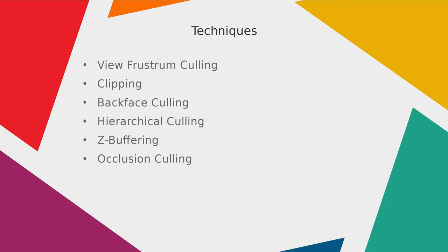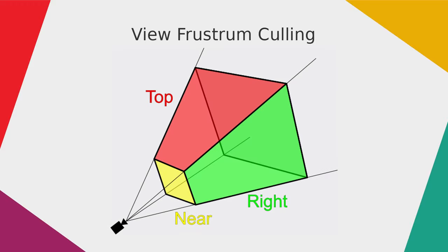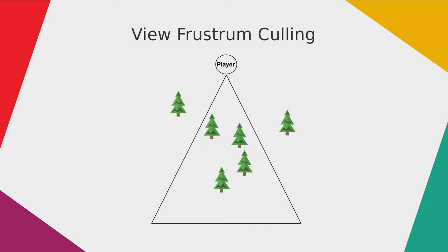I will talk about view frustum culling first. In computer graphics, the view frustum is the view of the player, and it has an end because you can't view unlimited far into the distance. This field of view of a perspective virtual camera is typically formed as a cone. It has a near and a far plane, and objects beyond the far plane or closer to the camera than the near plane are not rendered. Every object that is outside of this cone of vision will not be rendered.